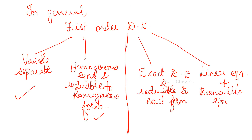Now it is of four kinds. We can categorize into four different types: variable separable; homogeneous equations and reducible to homogeneous form; exact differential equation and reducible to exact form; and linear equation and Bernoulli's equation. The first two you have already studied in intermediate, and now our syllabus starts from exact differential equation.